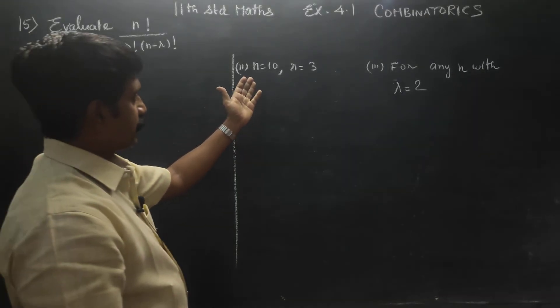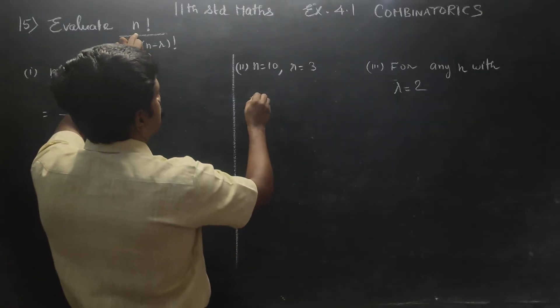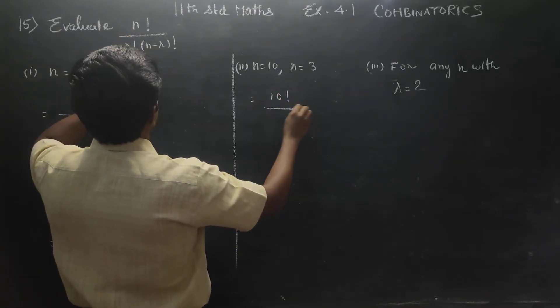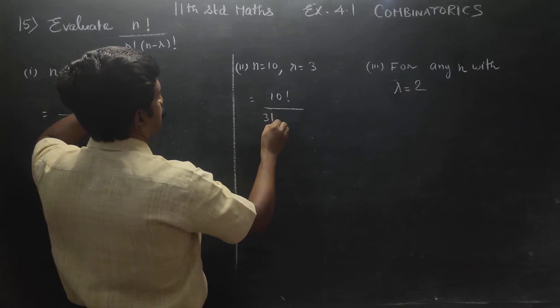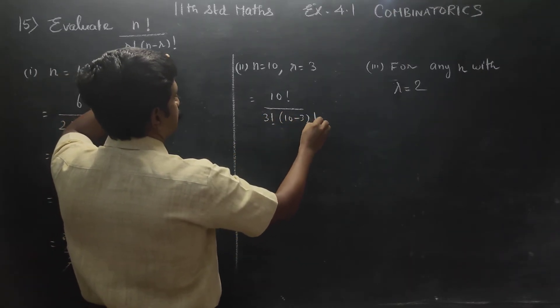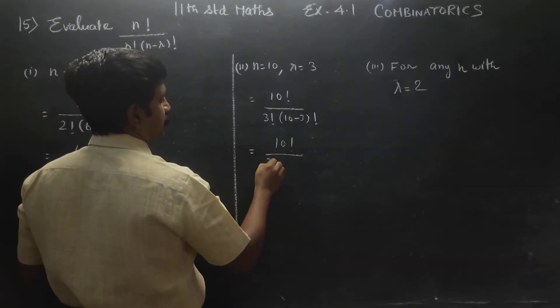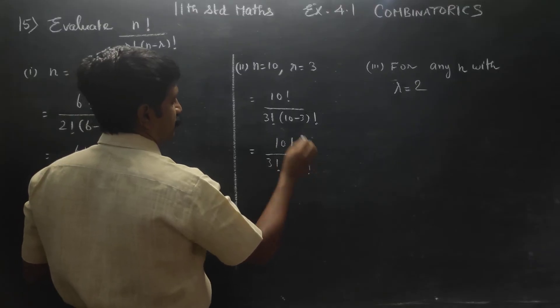Coming back here. n is equal to 10, r is equal to 3. Go and substitute here. 10 factorial by r is 3 factorial into n minus r. Therefore, 10 minus 3 factorial. 10 factorial by 3 factorial into 7 factorial.